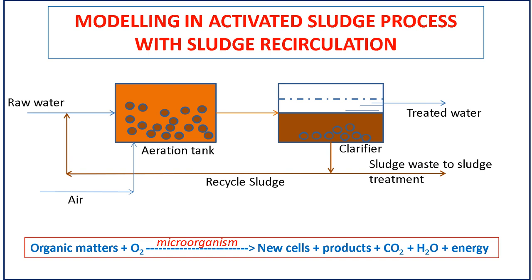In the aeration tank, aerobic microbes are developed by utilizing oxygen and organic compounds used for microbial metabolism. Aerobic microbes will degrade organic compounds in wastewater to produce carbon dioxide, water, new cell biomass, new compounds resulting from cell metabolism, and energy.